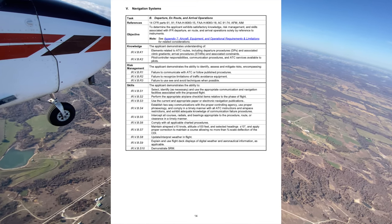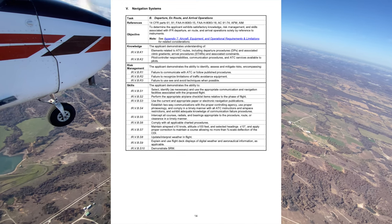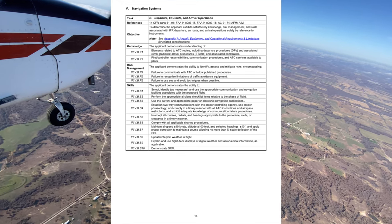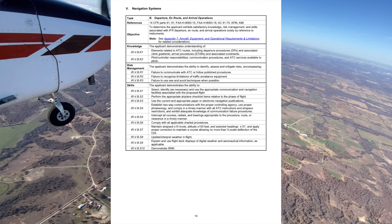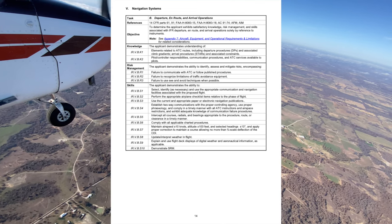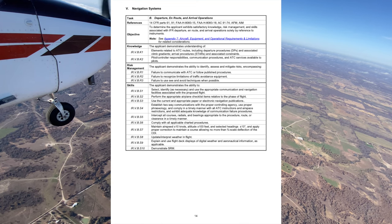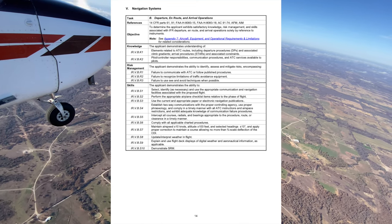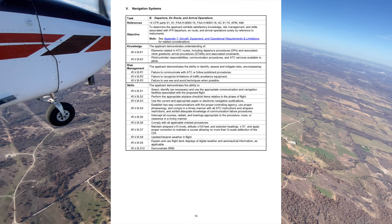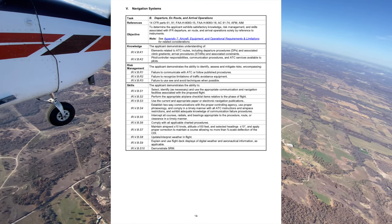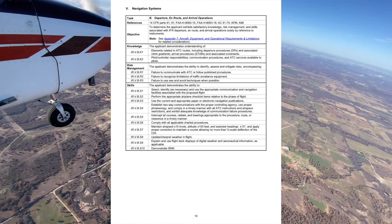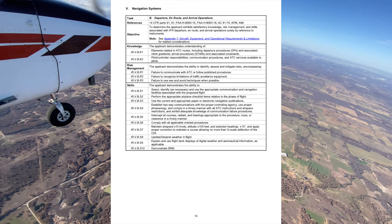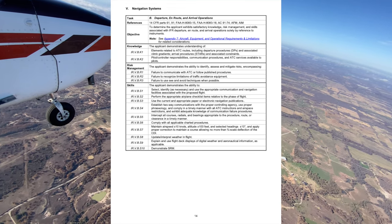Specifically for instrument approaches, Class E transition areas are highlighted on your sectional charts. They extend from either 700 feet AGL or 1,200 feet AGL. The 1,200-foot AGL transition area is shown in blue, and the 700-foot AGL area is shown in magenta. They are designated for airports with an approved instrument procedure.